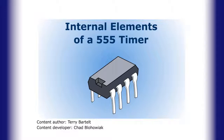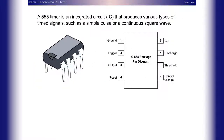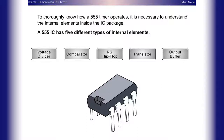A 555 timer is an integrated circuit that produces various types of time signals, such as a simple pulse or a continuous square wave. The type of signal produced is determined by which types of components are externally connected to the IC and by how those external components are connected. To thoroughly understand how a 555 timer operates, it is necessary to understand the internal elements inside the IC package. A 555 IC has five different types of internal elements.